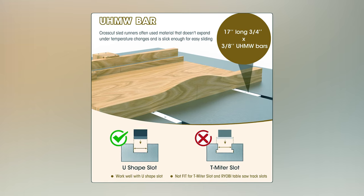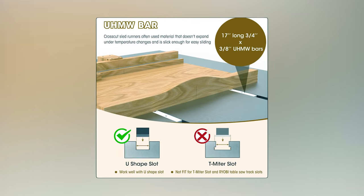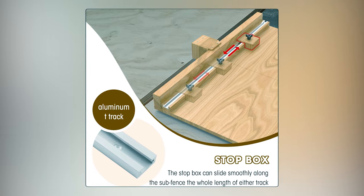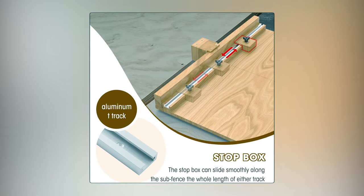The package includes UHMW bars for reduced friction and stability, aluminum T-tracks that can be trimmed, a star knob, and a bolt, ensuring the easy assembly of a sled.